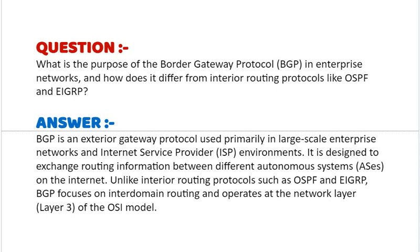BGP is designed to exchange routing information between different autonomous systems (ASes) on the internet. Unlike interior routing protocols such as OSPF and EIGRP, BGP focuses on inter-domain routing and operates at the network layer, that is Layer 3 of the OSI model.